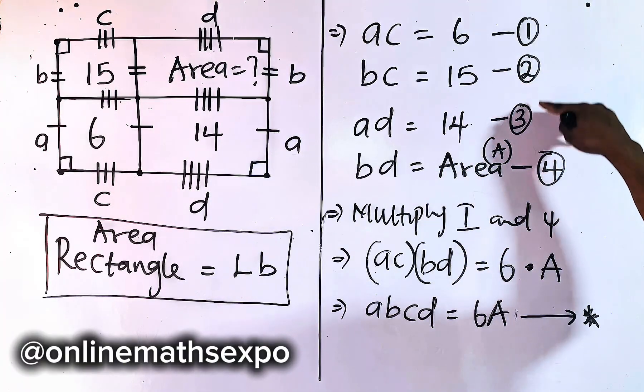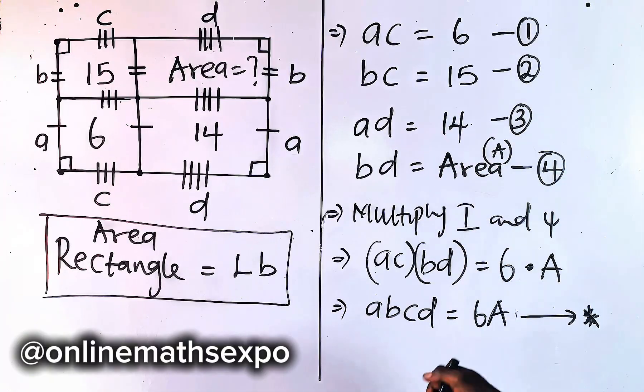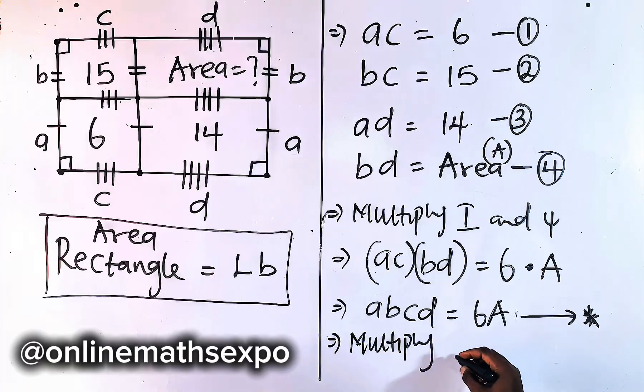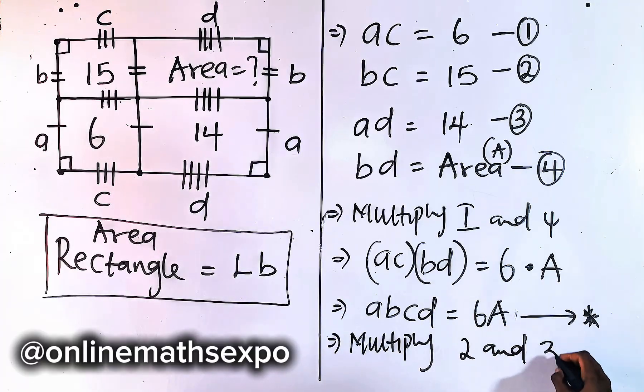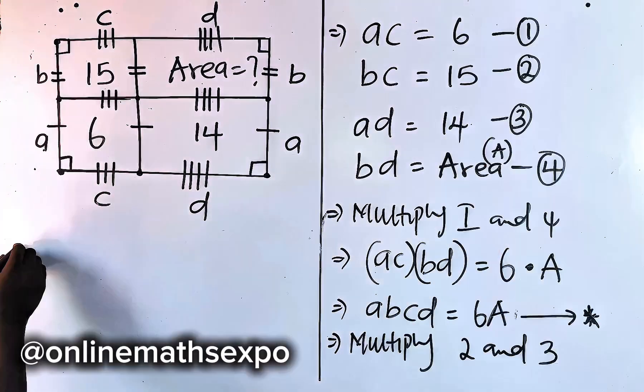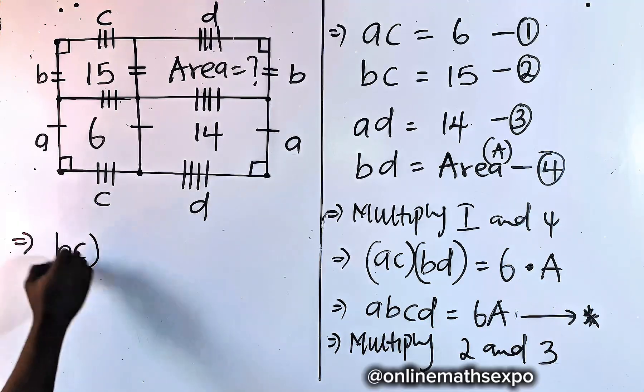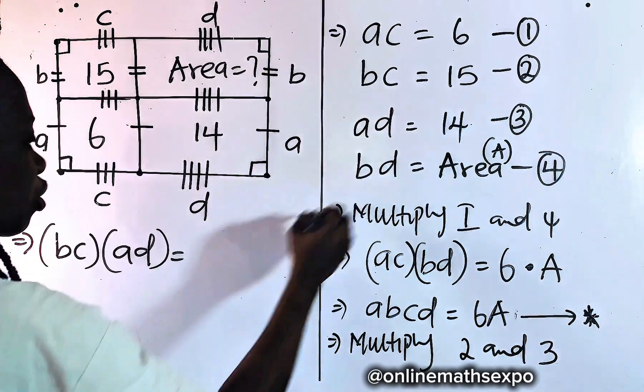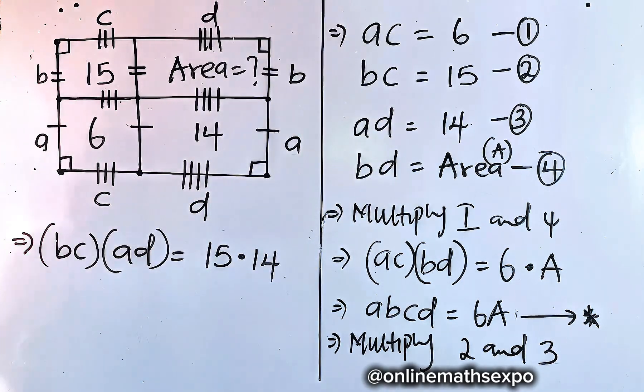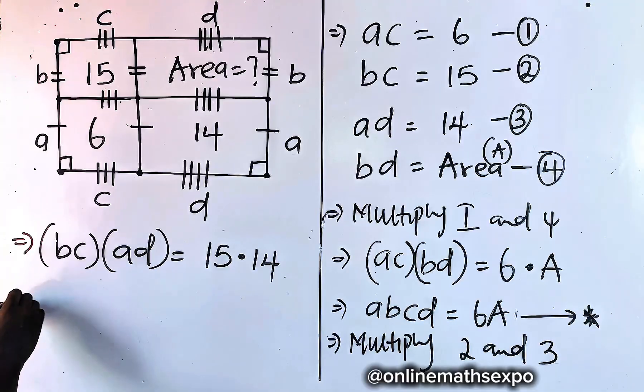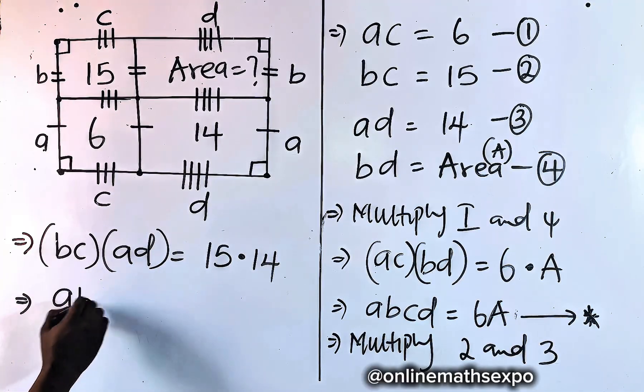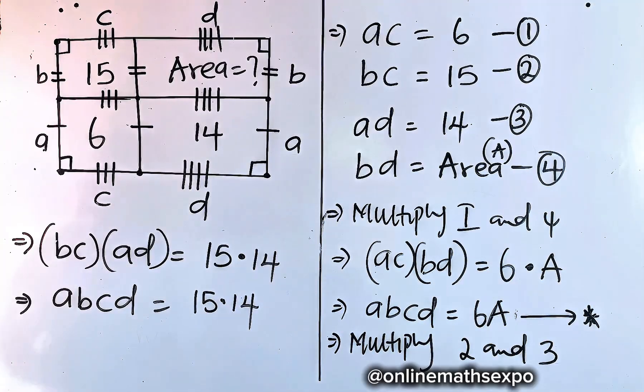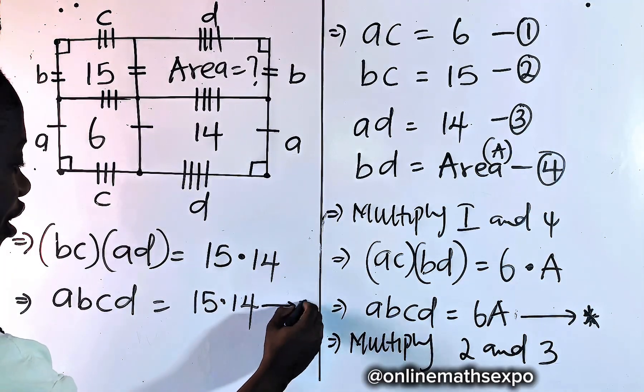Now, we also go to the remaining equations. We can choose to multiply these two. And to do that, we are going to have, so multiply equation 2 and 3. So let's do it. So we have BC multiplies AD. If you multiply this, it should be equal to 15 multiplies 14. Now, let's multiply this. It's going to give us ABCD is equal to 15 multiplied by 14. Now, we can also label this in this form.